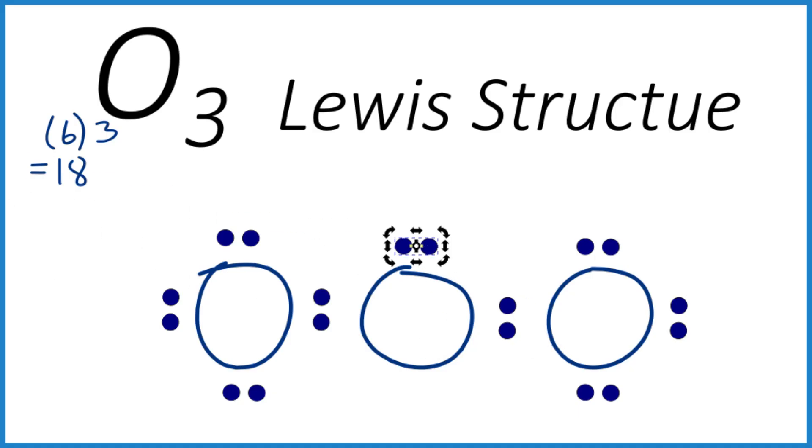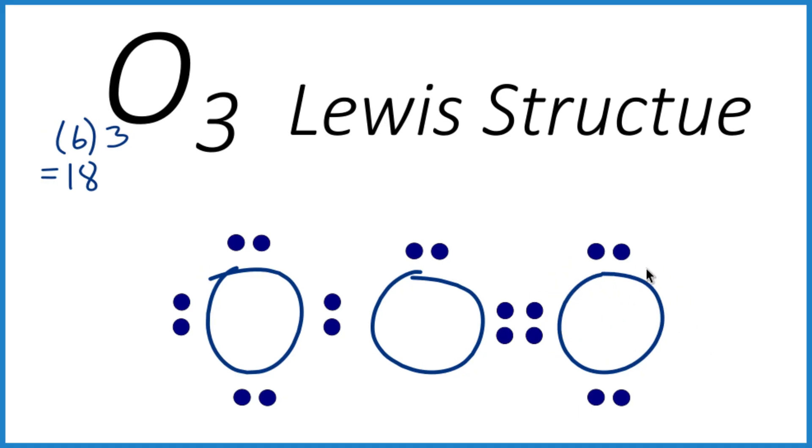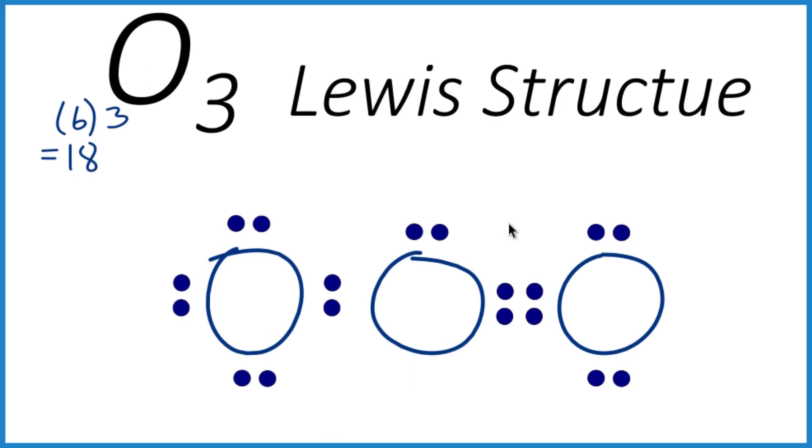And you can immediately see the problem. We have an octet here and here, but only six here. What we can do is take and form a double bond. We're going to move these right here. This oxygen has eight, this oxygen has eight, this oxygen has eight.